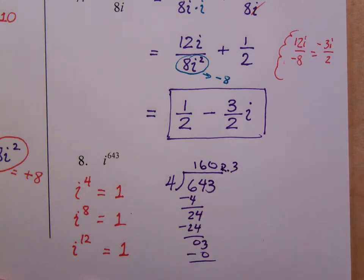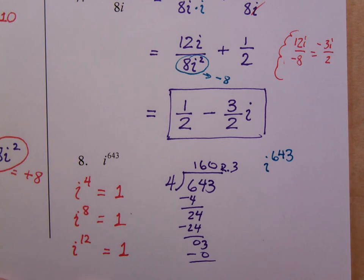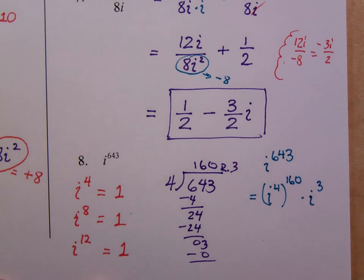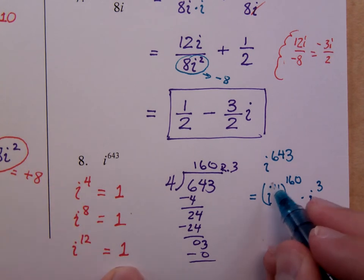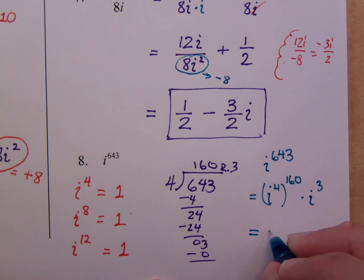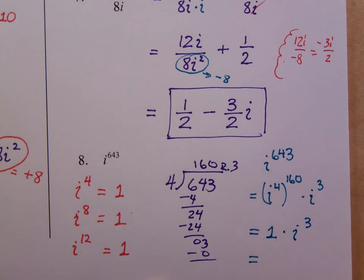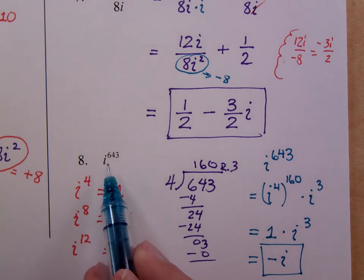So that means my i to the 643rd. I have 643 factors of i. Well, that means that there are 160 sets of 4. And you've got 3 left over. Well, i to the 4th, as we've said, is 1. i to the 8th is 1, and so on. So, as long as this power is a multiple of 4, which it is, because it's 4 times 160, this is just going to give me a factor of 1 times i to the 3rd. Well, what is i to the 3rd? Well, i to the 3rd is i squared times i, and you end up with negative i. So all of that just to say that i to the 643rd power is negative i.